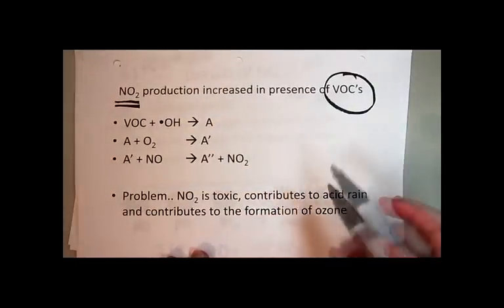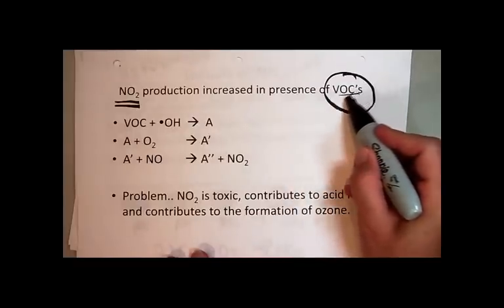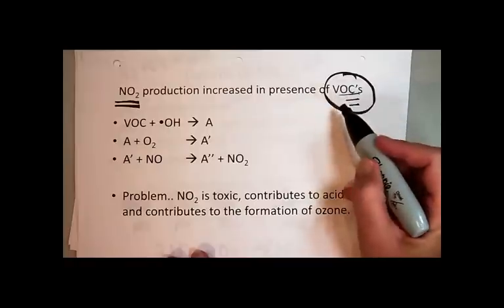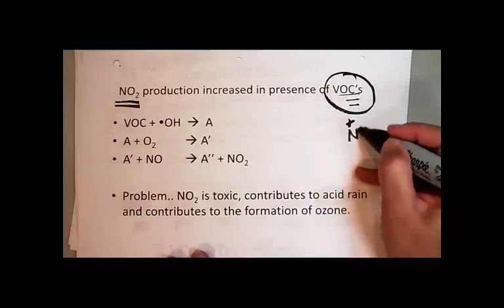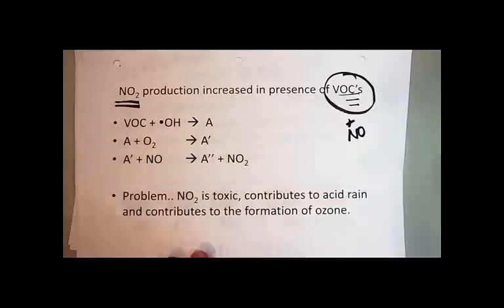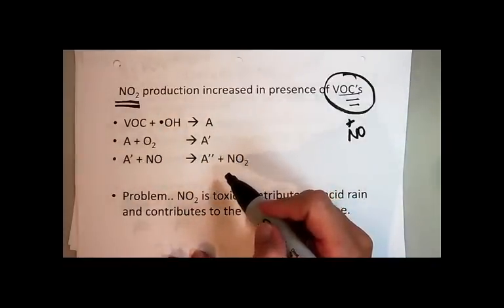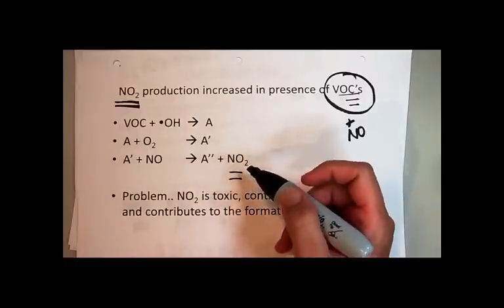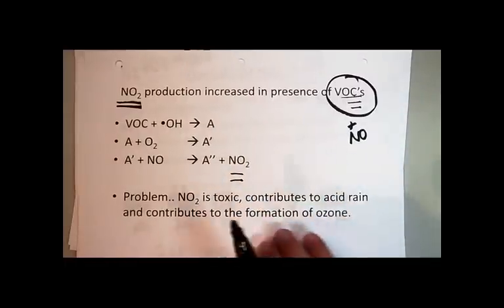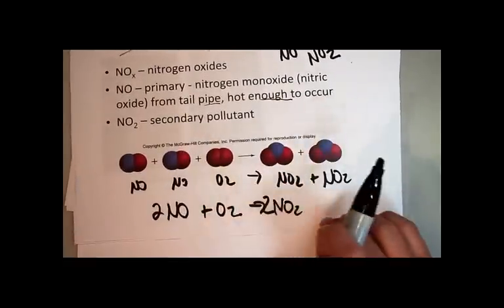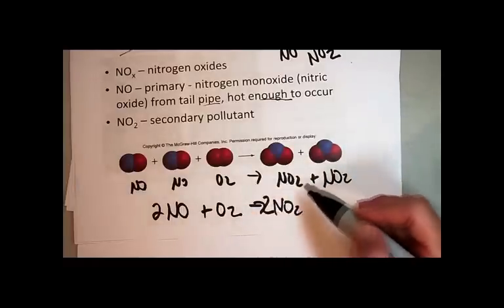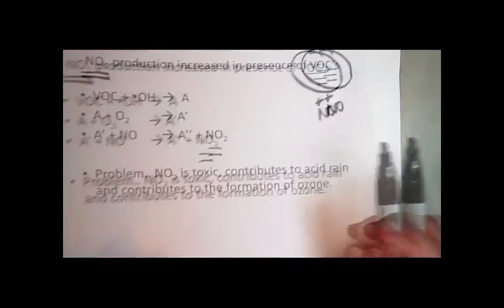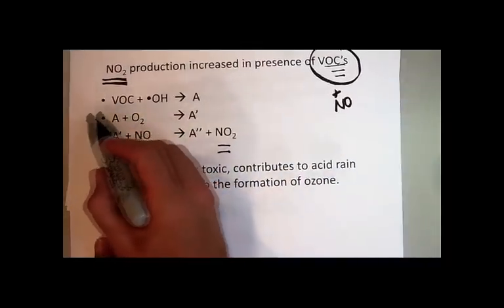So that's the problem with the tailpipe. That's why we want to limit, we need to limit the amount of VOCs that are coming out of the tailpipe, because when the VOCs are coming out at the same time that you're producing the nitrogen monoxide, that's where we can have actually this NO2 formed. This reaction that I showed you previously is naturally very, very slow. It doesn't really contribute to the production of nitrogen dioxide as a pollutant. The problem is, in the presence of these VOCs.